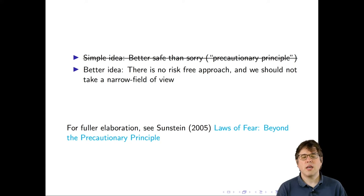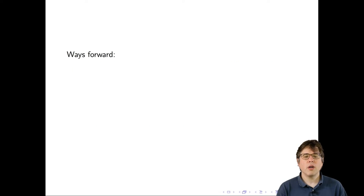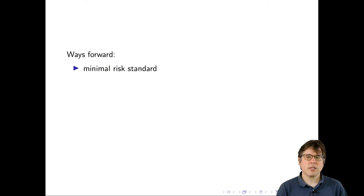We should not take a narrow field of view — we shouldn't just focus on the risks from the research, but also keep in mind the risks of not doing the research. There's a fuller elaboration of this in Cass Sunstein's book from 2005, The Laws of Fear: Beyond the Precautionary Principle. One way forward is the minimal risk standard. Even if we can't quantify the actual level of risk, we might be able to benchmark it to the risk people have in their everyday life. For emotional contagion, if the changes to the emotional valence of the newsfeed were within the range people are ordinarily exposed to, you could argue the risk from the study is similar to risk people voluntarily take when they look at the newsfeed.